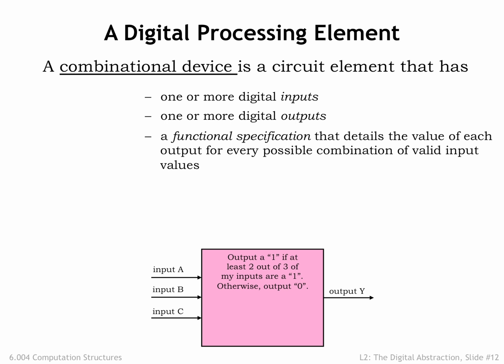Next, a combinational device is required to have a functional specification that details the value of each output for every possible combination of digital values on the inputs. In the example, the device has three digital inputs, and since each input can take on one of two digital values, there are 2x2x2 or 8 possible input configurations. So the functional specification simply has to tell us the value of the output y when the inputs are 0, 0, 0, and the output when the inputs are 0, 0, 1, and so on for all 8 input patterns. A simple table with 8 rows would do the trick!